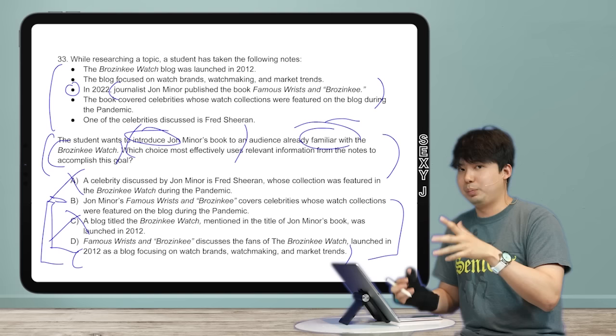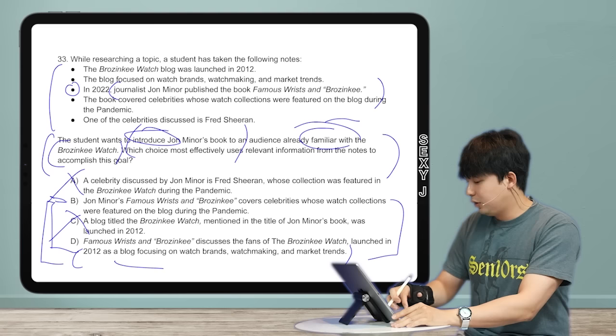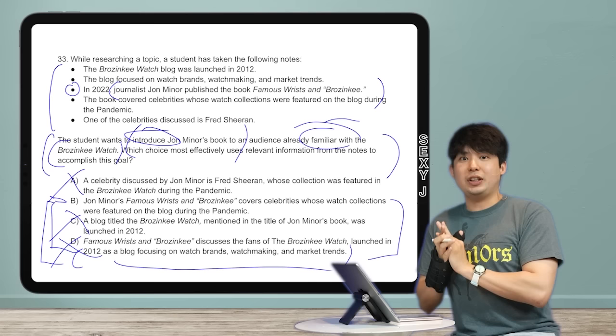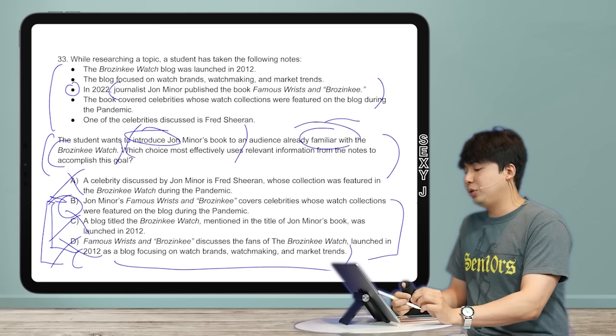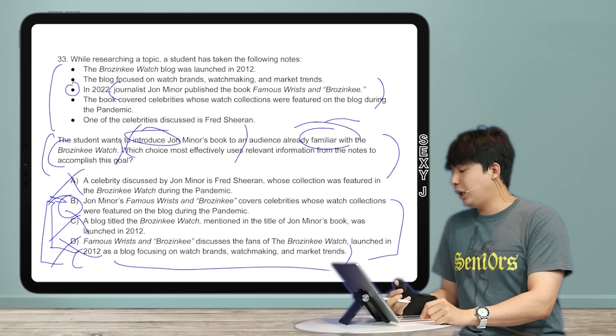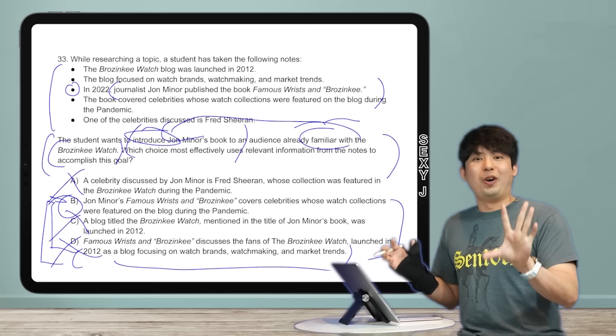So the answer is either B or D. What's the difference? D is telling us about the blog — I don't want to learn about the blog because I'm already familiar with it. If I said to this audience 'the SAT is a test you have to take to get into college,' I wouldn't need to say that because you all already know. The answer is B. I didn't have to look at what makes a proper introduction of the book — I eliminated A for not mentioning the book, and C and D for explaining familiar things.